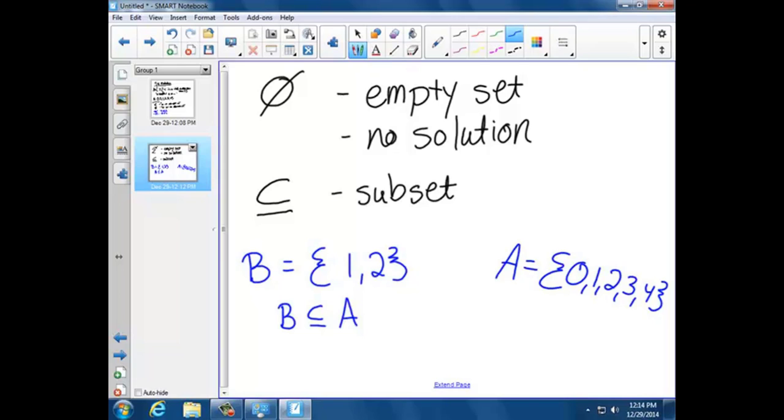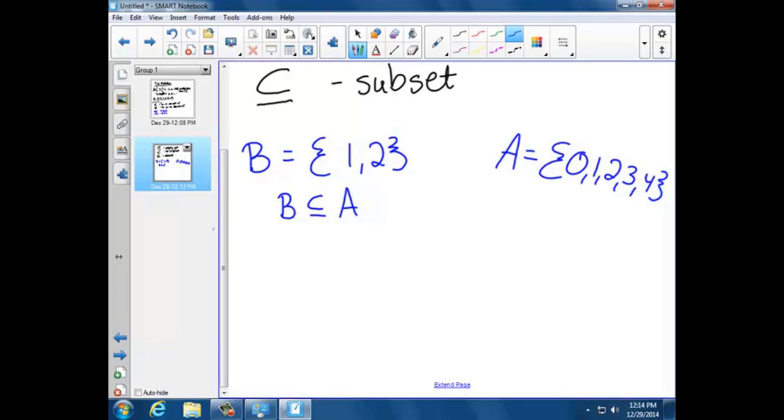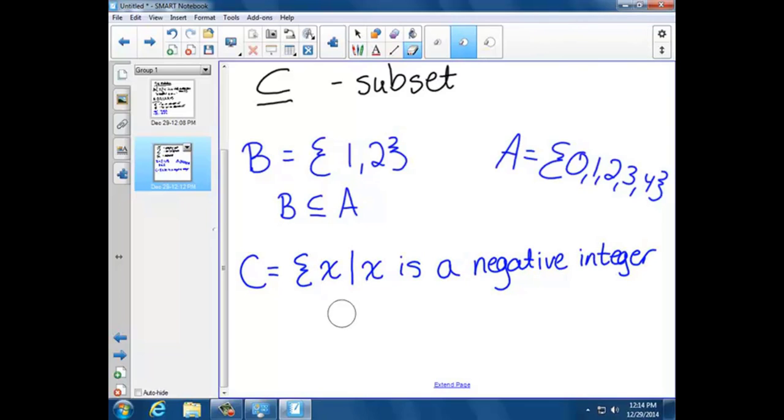Now let's do an example where we would have no solution. Let's say we're talking about set C - x such that x is a negative integer more than 8. Is that possible to have a negative integer more than 8? Well, that's not even possible.